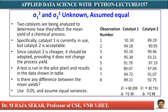The problem: two catalysts are analyzed to determine how they affect the mean yield of a chemical process. Catalyst 1 is currently in use, but catalyst 2 is acceptable. Since catalyst 2 is cheaper, it should be adopted provided it does not change the process yield. A test is run in the pilot plant. We need to test whether there is any difference between the means, with a level of significance of 0.05.